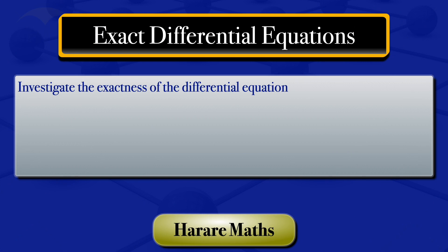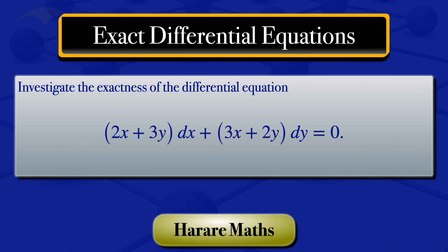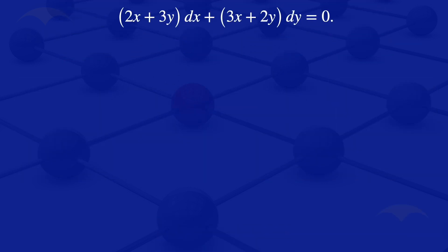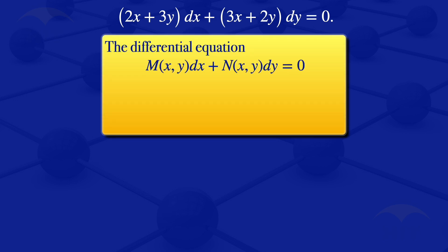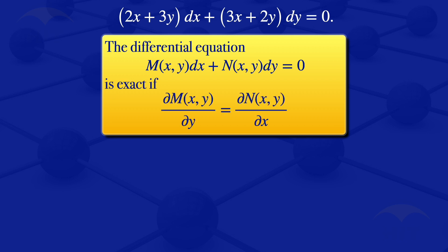In this video I'm going to investigate if the equation (2x + 3y)dx + (3x + 2y)dy = 0 is exact. A differential equation of the form M(x,y)dx + N(x,y)dy = 0 is exact if the partial derivative of M with respect to y equals the partial derivative of N with respect to x. So looking at this equation here,